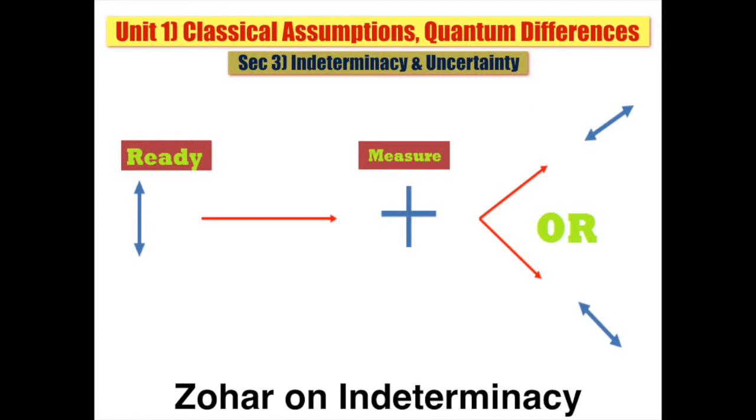Consequently, we are left with what Zohar calls the central unanswered problem of quantum theory. How can anything in this world ever become actual or fixed? It is the very opposite of the dilemma raised by Newton's clockwork universe in which there is no scope for the new. Reading Newton, we have to ask, how can anything ever happen? With the Bohr-Heisenberg interpretation of quantum mechanics, the great problem becomes, how can anything ever be?